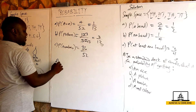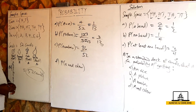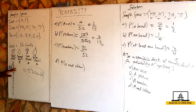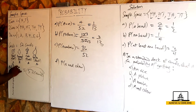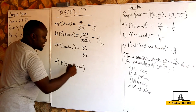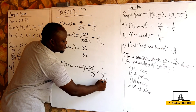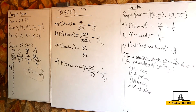Now the last part: the probability of getting a red color. For a red color we consider the heart and the diamond, which are red. Each has 13 cards, so 13 plus 13 is 26. The rest are black and we exclude them. So we have 26 over 52, which equals 1 over 2.